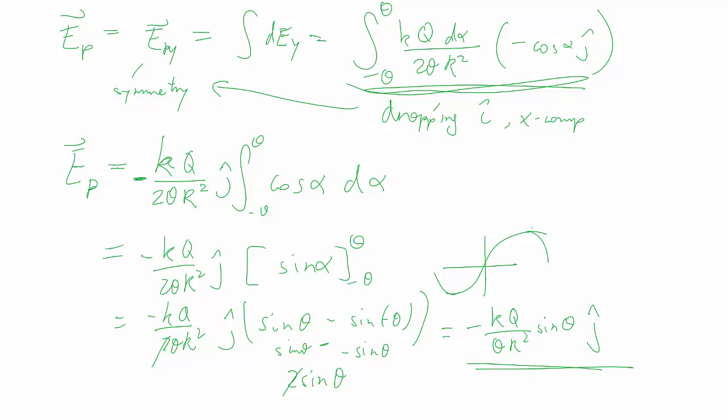And then as a quick double check, we can check that for q greater than zero, the E is in the negative j-hat direction, which is what we expect due to the symmetry, and also the direction and the moving away from the positive charge. So everything makes sense. And that's just a demonstration of how we deal with circular arcs. Thank you.